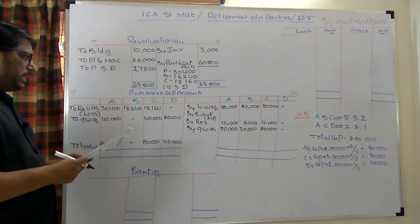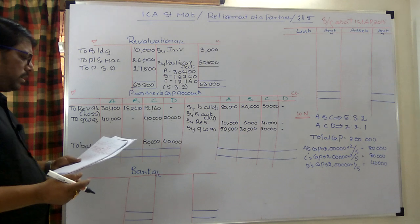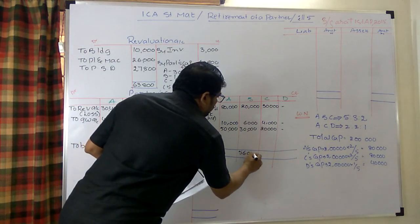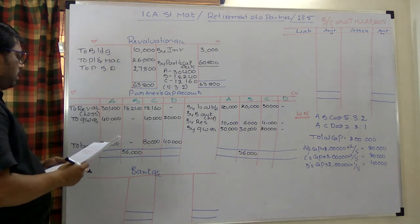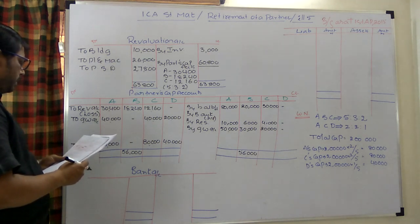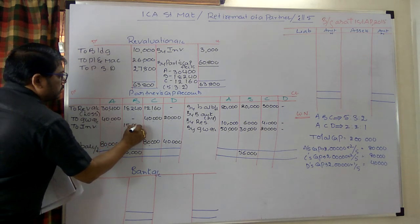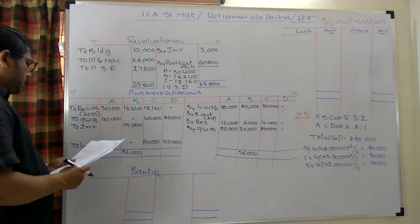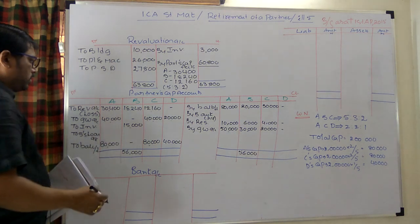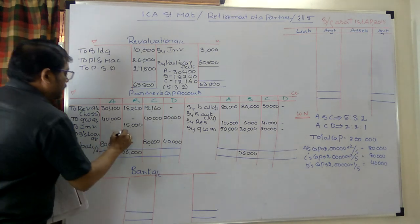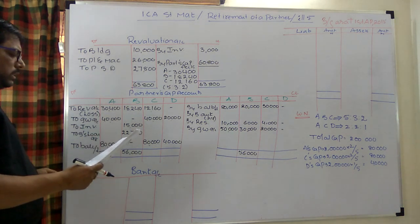Now for the retiring partner B: B's credit total is 56,000. Revaluation loss of 18,240 is debited. Investments worth 15,000 are given to B. The remaining balance — 56,000 minus 18,240 minus 15,000 = 22,760 — is transferred to B's loan account. So B is not fully settled in cash; 22,760 is carried as B's loan in the new balance sheet.